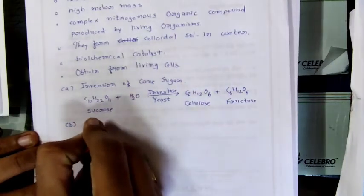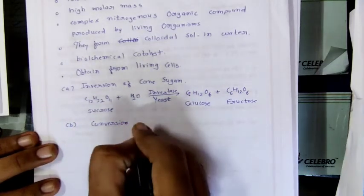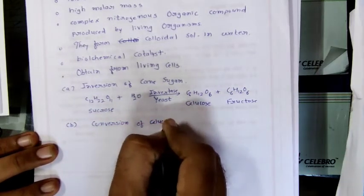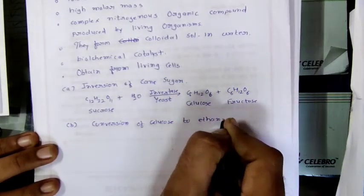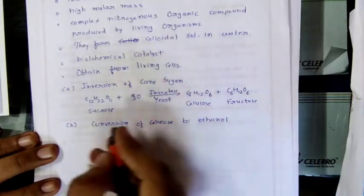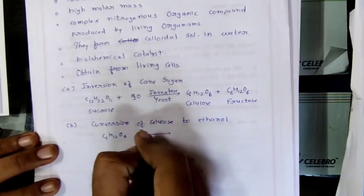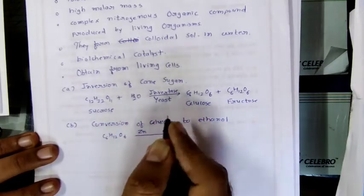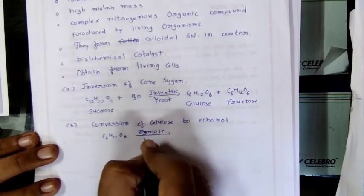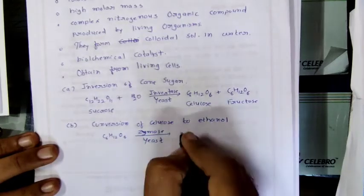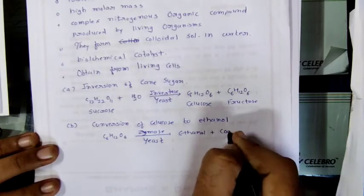The second example is the conversion of glucose to ethanol: C6H12O6, in the presence of zymase enzyme (also obtained from yeast), converts to ethanol plus carbon dioxide.